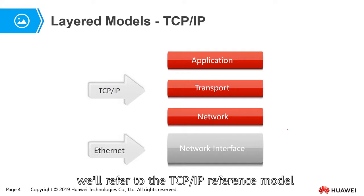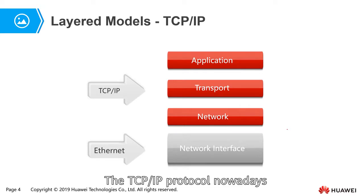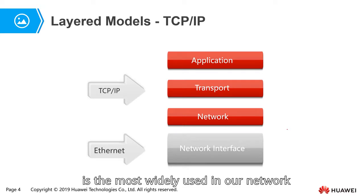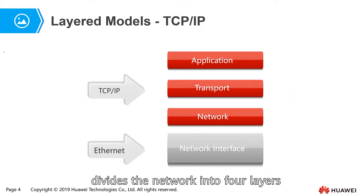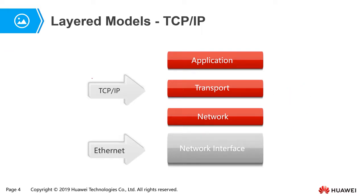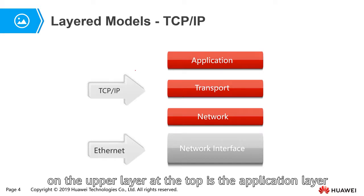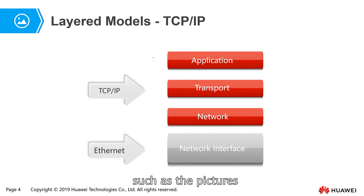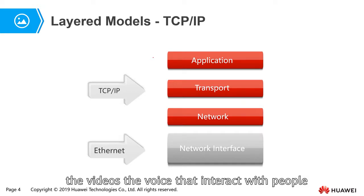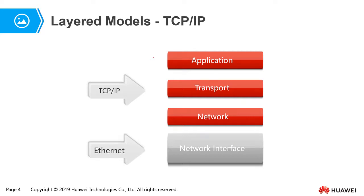The TCP/IP protocol is nowadays the most widely used in our network. The TCP/IP reference model divides the network into four layers. At the top is the application layer — the application layer is the presentation of applications, such as pictures, videos, and voice that interact with people.